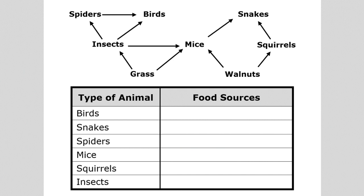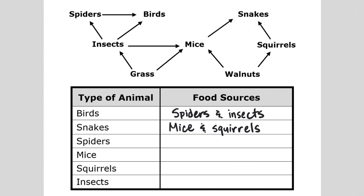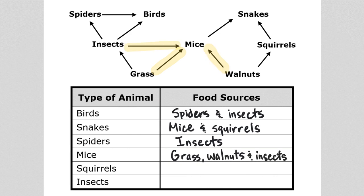Birds consume spiders and insects. Snakes consume mice and squirrels. Spiders consume insects. Mice consume grass, walnuts, and insects. Filling out a table of food sources is really simple — you're just looking at each organism one at a time and paying attention to which arrows are pointing toward that organism.